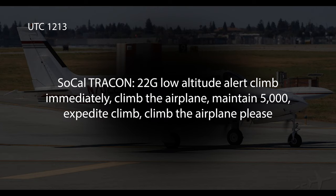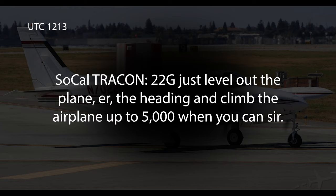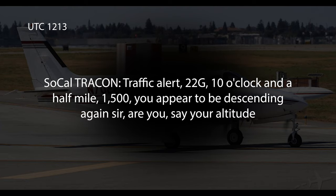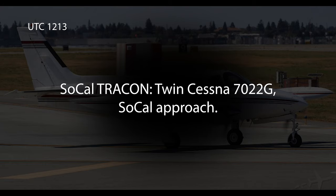22G, low altitude alert, climb immediately, climb the airplane, maintain 5,000, expedite climb, climb the airplane please. 22G, just level out the plane and climb the airplane up to 5,000 when you can, sir. 10 o'clock and a half mile, 1,500, you appear to be descending again, sir. Say altitude? 7022G, SoCal approach.